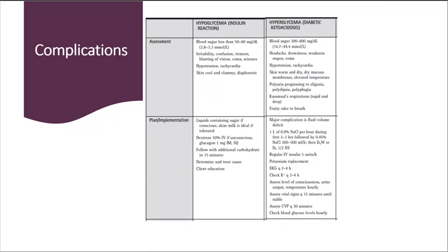These individuals will have blood sugar levels between 300 to 800 milligrams per dL. They will have headache, drowsiness, weakness, stupor, coma. They would also be tachycardic and hypotensive. In contrast to hypoglycemia where the skin is cold and clammy, in clients with hyperglycemia, their skin is going to be warm and dry. Mucous membranes are going to be dry and there will be elevation in temperature.